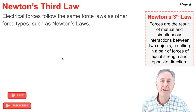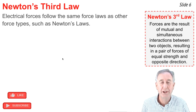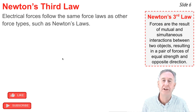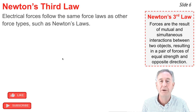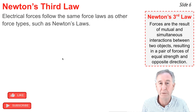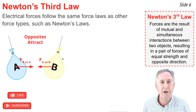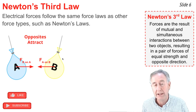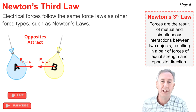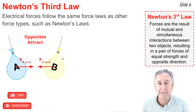Electrical forces follow the same force laws as any other force types, like Newton's third law, which states that forces are the result of mutual and simultaneous interactions between objects, resulting in a pair of forces that are of equal strength in opposite directions. So when we see balloons A and B attracting one another, we know there are two forces: one on A and the other on B — the force of B pulling A to the right, and the force of A pulling B to the left.